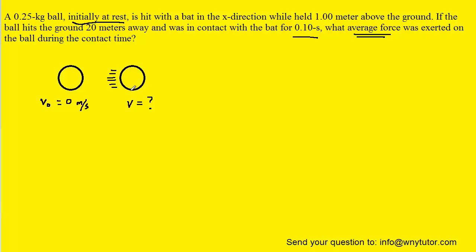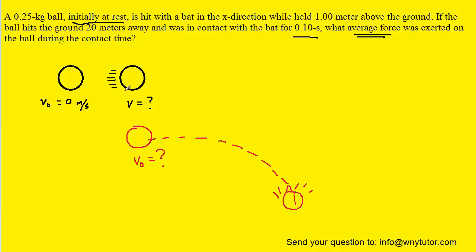Here comes the key to the problem. What we have to understand is that the final velocity after the bat has hit the ball becomes the initial velocity of a projectile motion question, in which the ball is hit forward and falls down to ground level. That's very important: the final velocity after the bat has hit the ball becomes the initial velocity of a projectile motion question. We'll analyze the projectile motion to find that initial velocity and then carry it back and use it as the final velocity for the first part of the problem.